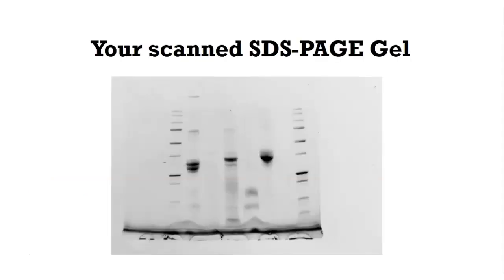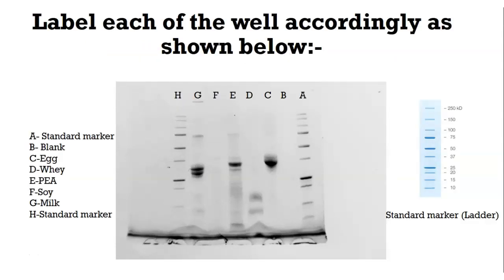So you have your scanned gel, which will look something similar to this. In our case, we had different proteins that we were looking at and trying to separate based on their molecular weight distribution. Once you have the gel that you've scanned in the lab, step number one is to copy the gel scan into a PowerPoint. Once you've done that, clearly label all the wells accordingly — here, for example, we have the first well, which I've labeled as Well A.